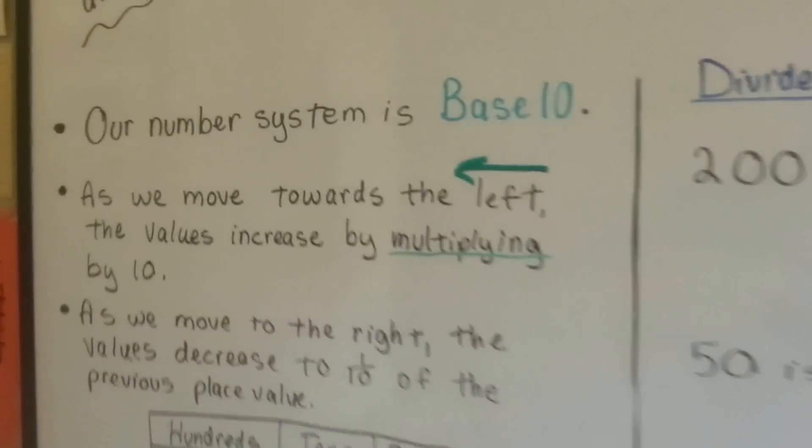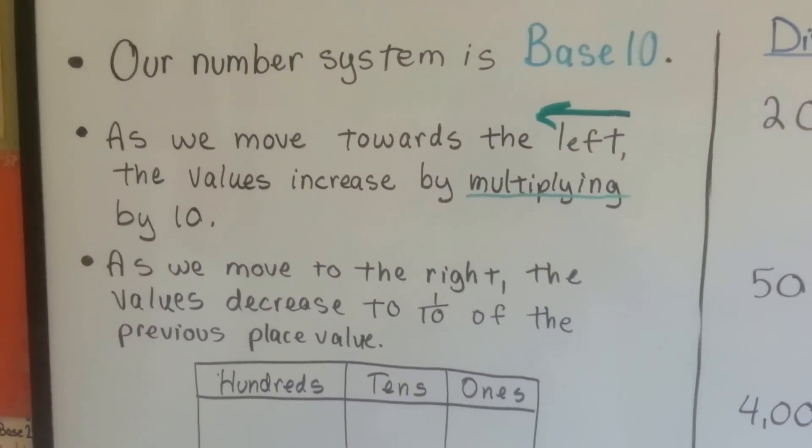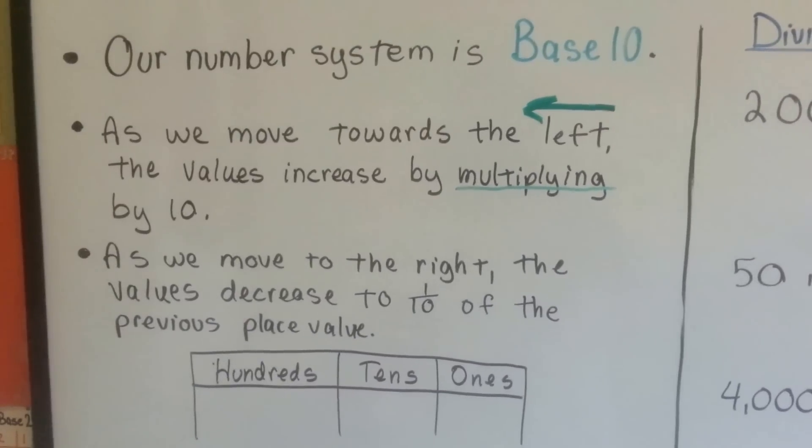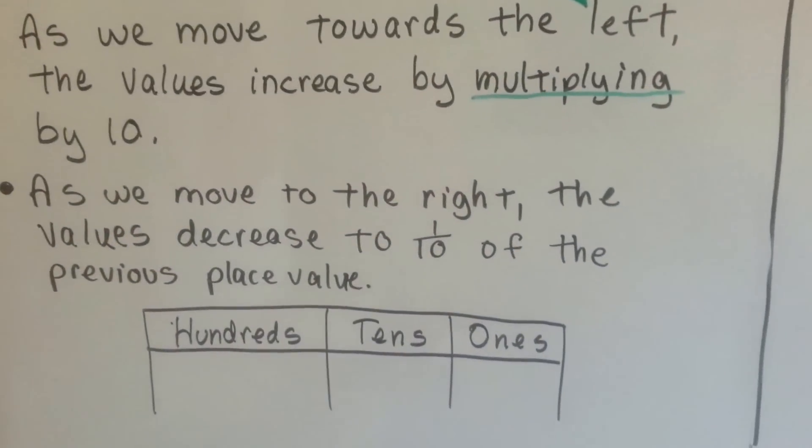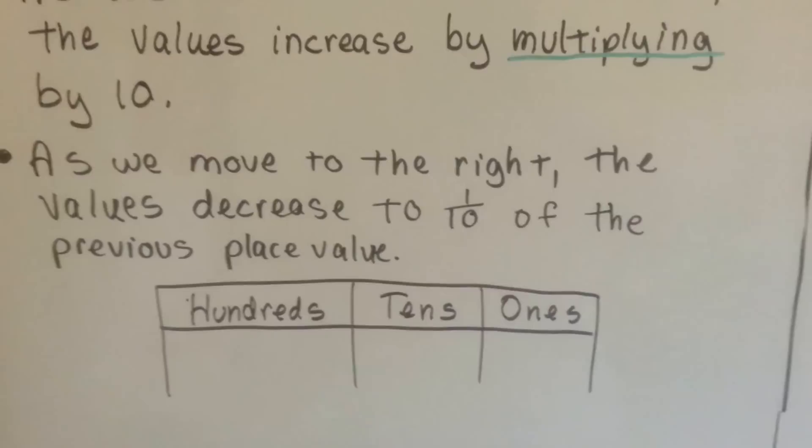Our number system is base 10. As we move towards the left, the values increase by multiplying by 10. As we move to the right, the values decrease to 1 tenth of the previous place value.